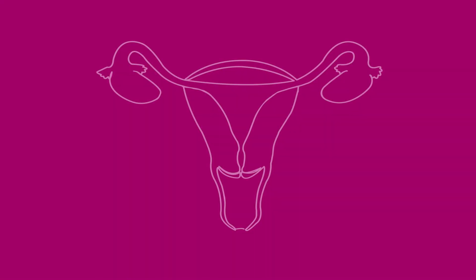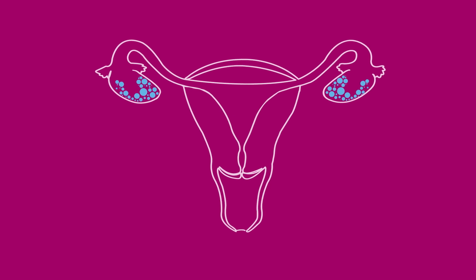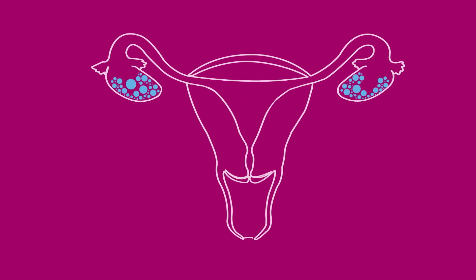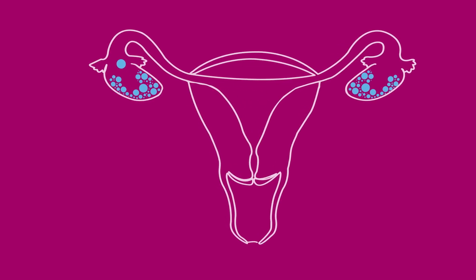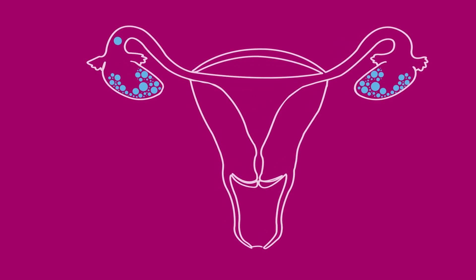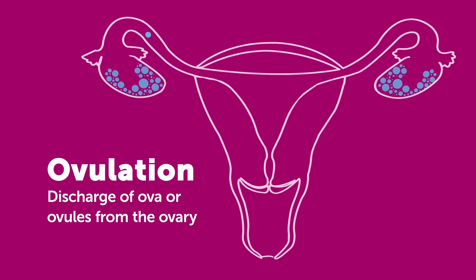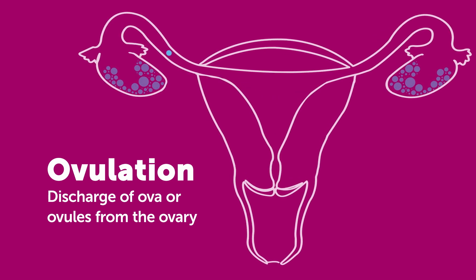Let's start with the basics. The female reproductive system contains two ovaries that hold eggs. Each month, a mature egg leaves an ovary and travels down the fallopian tube towards the uterus. This is called ovulation.